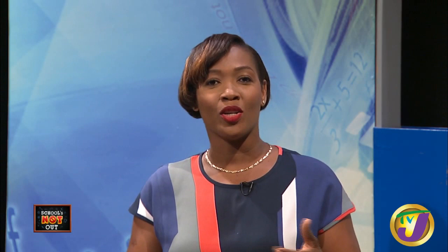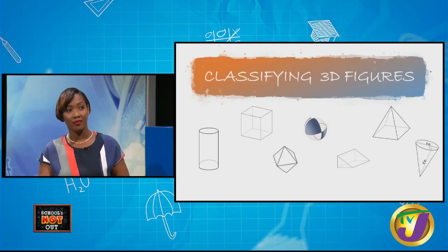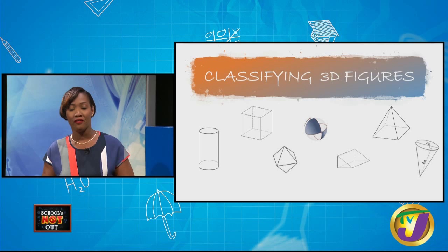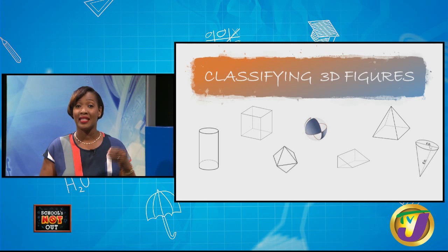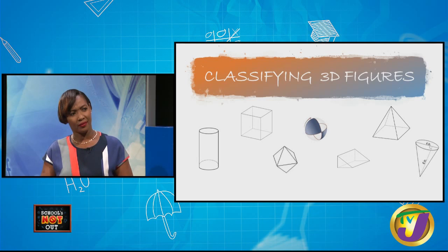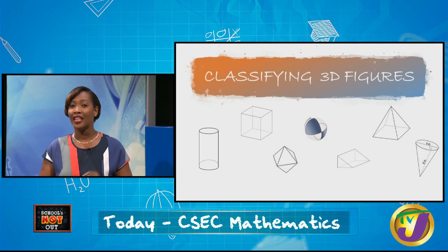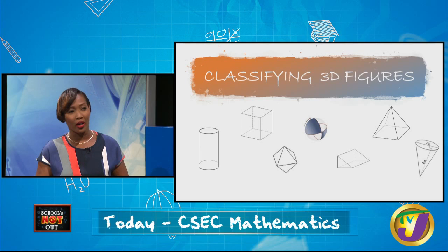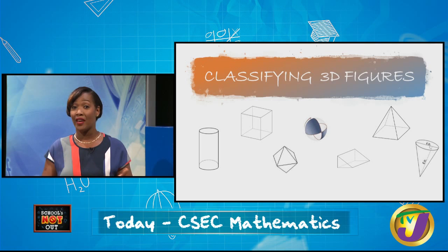Today, we'll begin with classifying our solids — classifying 3D figures, which are our solids. If you were to place these solids into two groups, what would these groups be? If you said polyhedron and non-polyhedron, well done. Let's look at what a polyhedron is. A polyhedron is a solid with flat faces, which means each face is a polygon.